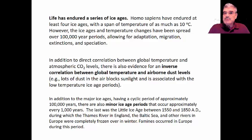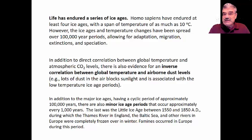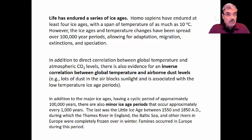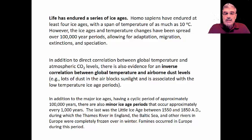In addition to the direct correlation between global temperature and atmospheric carbon dioxide levels, there's also evidence that cooling events can be triggered by dust particles and volcanic eruptions that block the transmission of sunlight and lower temperature. In addition to major ice age periods with a cycle of approximately 100,000 years, there can also be minor ice age periods occurring with a frequency of maybe every thousand years. The last minor ice age, called the Little Ice Age, occurred between about 1550 and 1850 AD, during which the Thames River in England froze, the Baltic Sea froze, and other European rivers were completely frozen over winter, leading to famines in Europe.